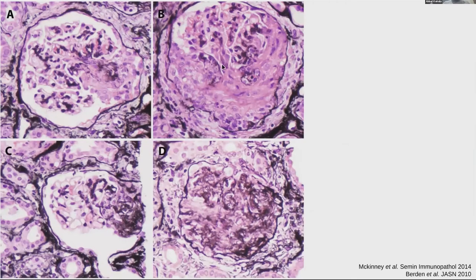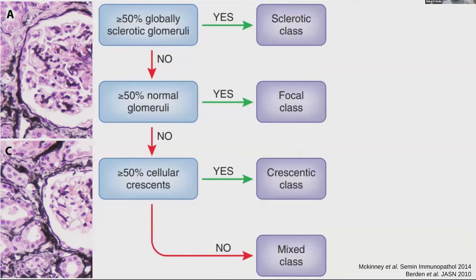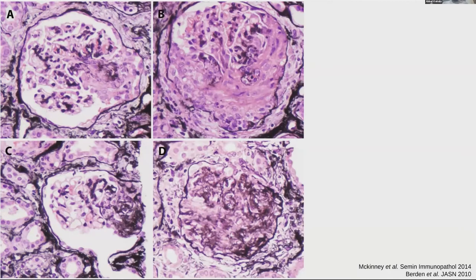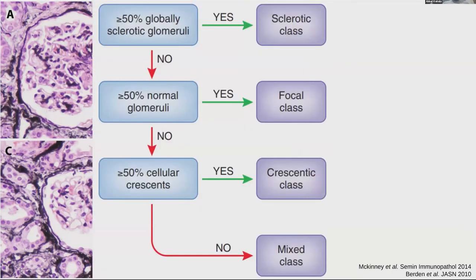These are four different biopsy pictures of patients with ANCA vasculitis. The first shows a small cellular crescent involving 10 to 20% of a glomerulus. B is a patient with a crescent involving most of the glomerulus. C is a patient with a small fibrous crescent, and D is a globally sclerotic glomerulus.